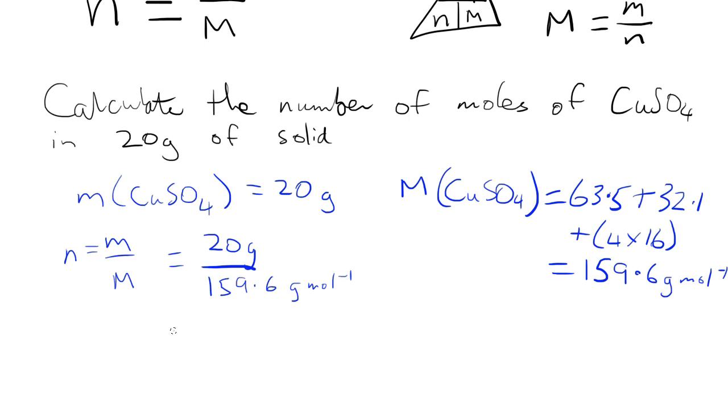When I put those numbers into a calculator what comes out the other side is quite a long ugly number, I get 0.12531. As we're in level 2 chemistry we're going to round that number to three significant figures, so my answer is going to end up being 0.125 mole, and that is to three significant figures.